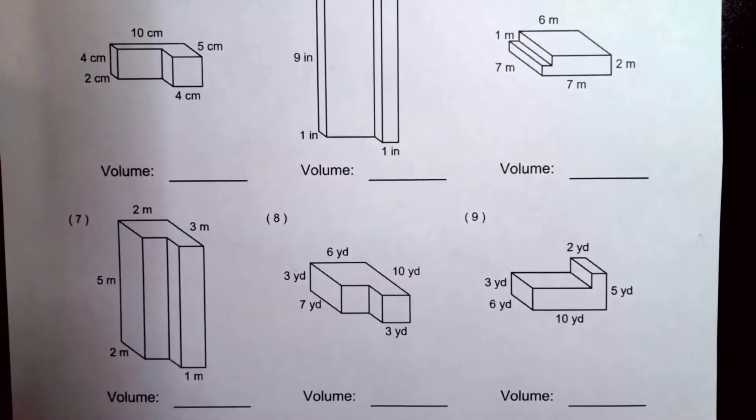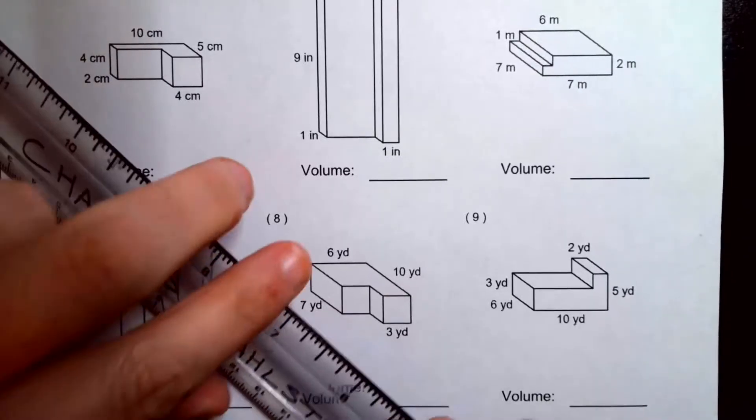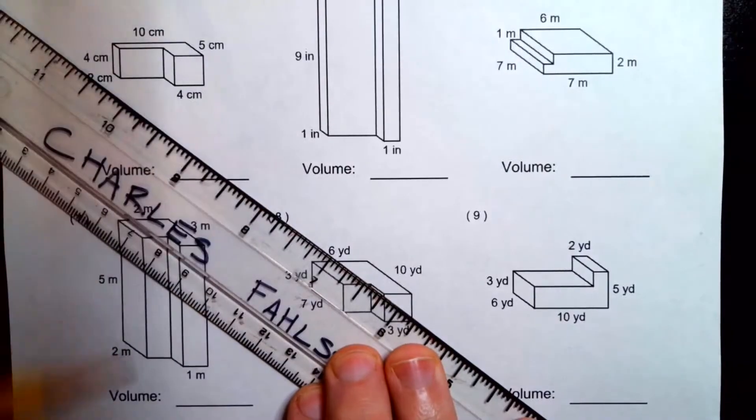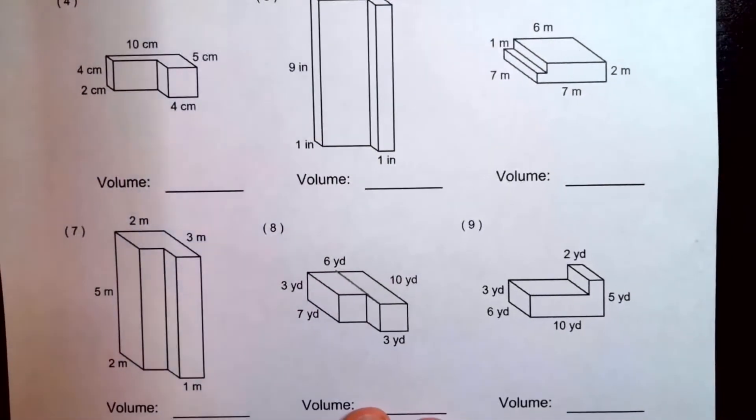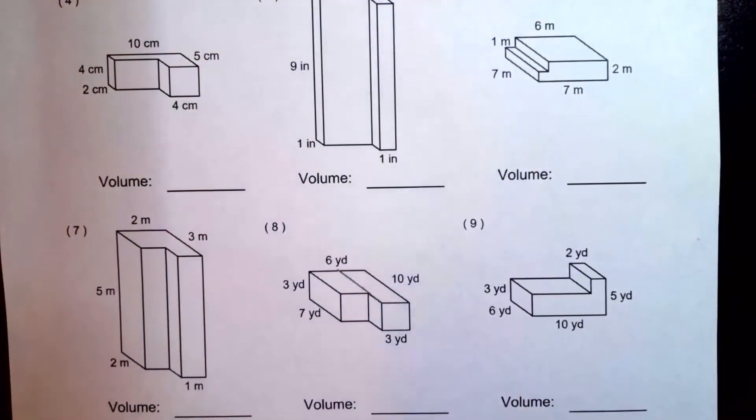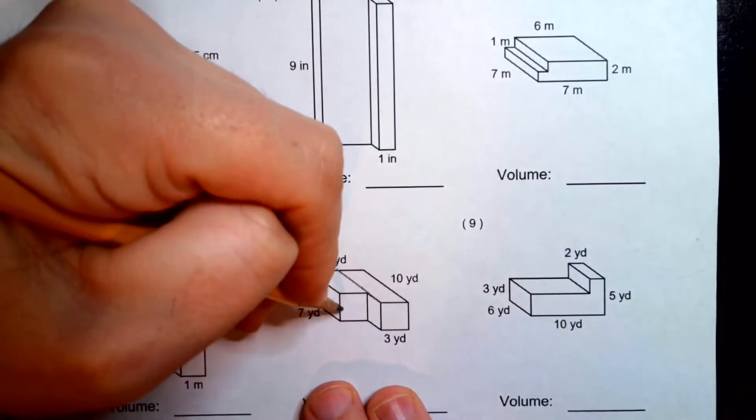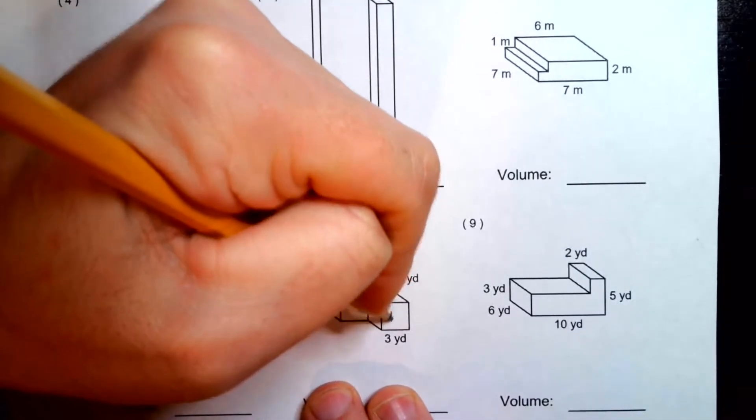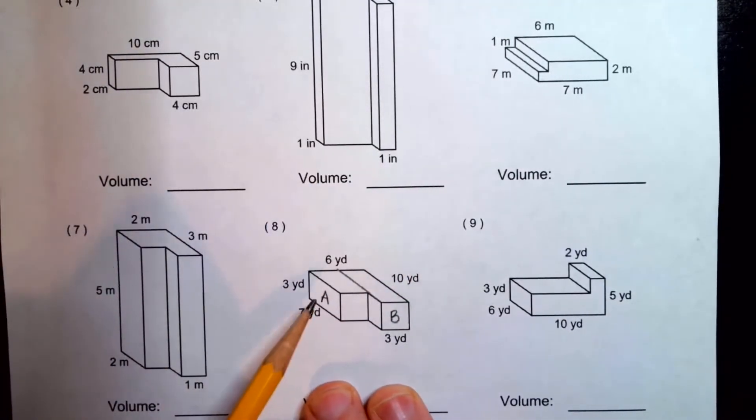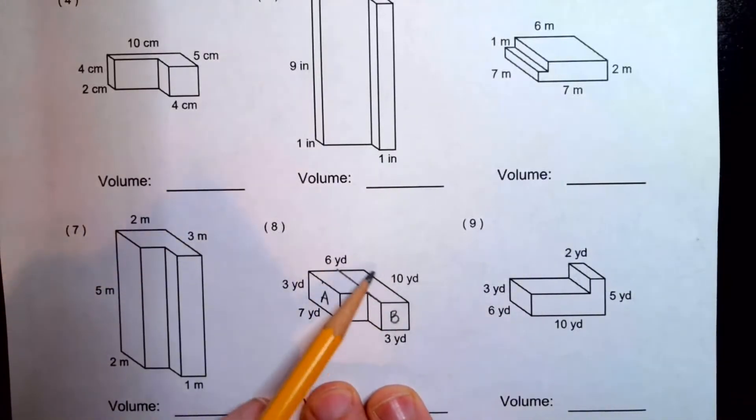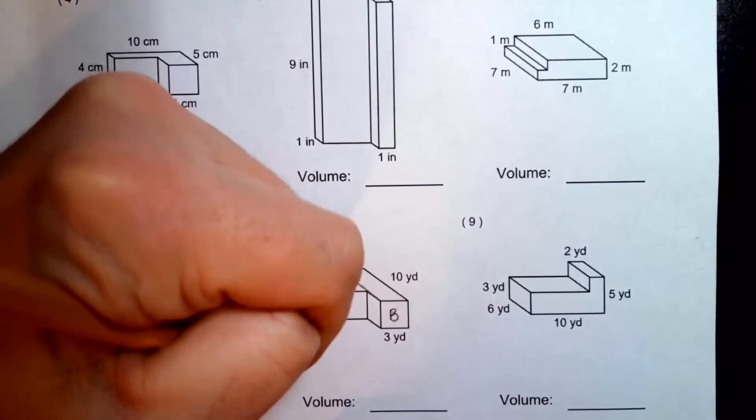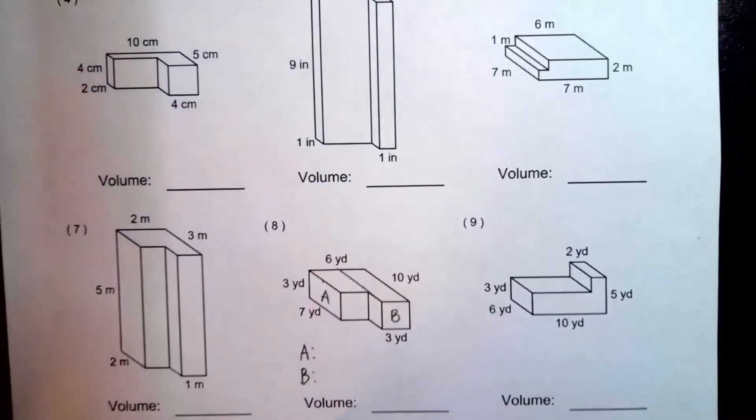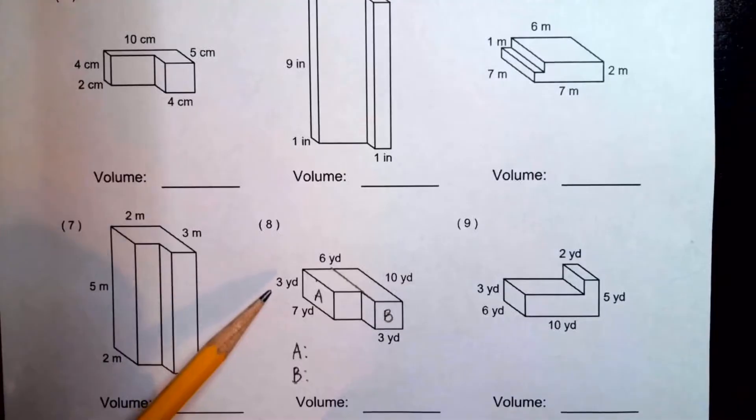First step to finding a composite figure is what? It is, we have to split the composite figure into prisms. I'm going to use this ruler to help me make this look a little nicer. So, we're going to split this one like this. Now I've split it into two rectangular prisms, and then what I like to do is I'm going to label them. I'm going to call this one prism A, and we're going to call this one prism B.